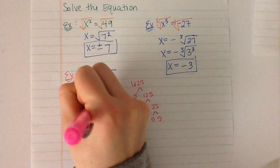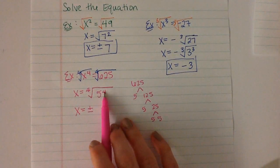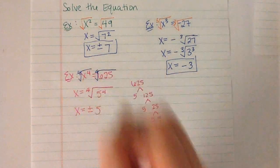So x is going to equal plus or minus. One group of 4 can go into 4, so we're left with 5.